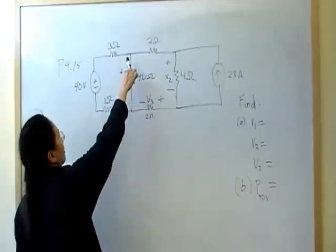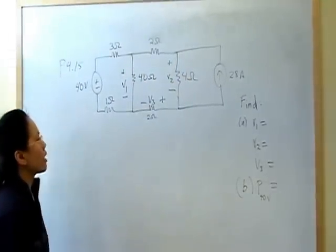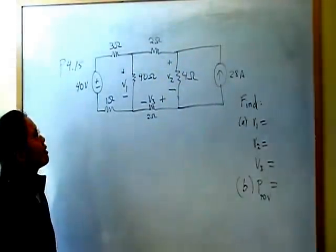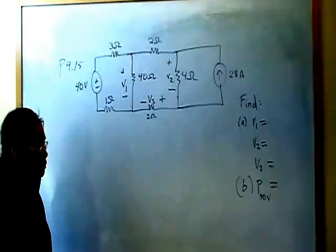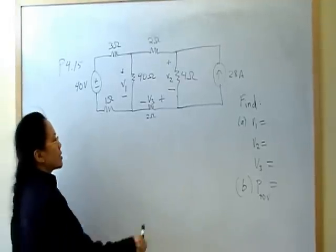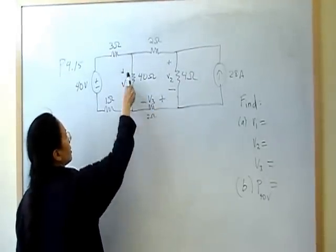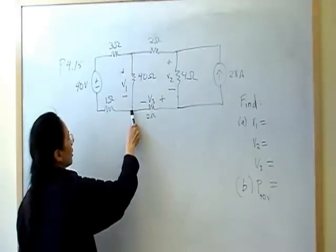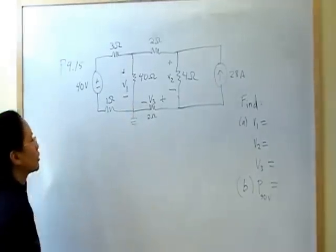Now, notice that you can make anything. I can make this the reference node, this the reference node, anything. And the mathematics will always work itself out. But where it makes sense is right here, because this is going from positive to negative, this is going from positive to negative, they meet here. So my math will be most simple if I take that to be the ground node.